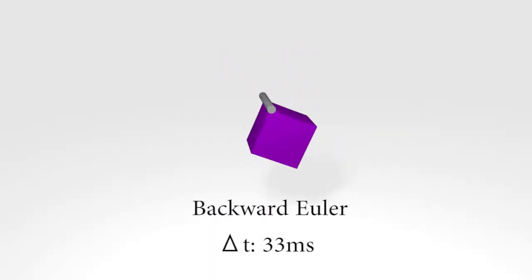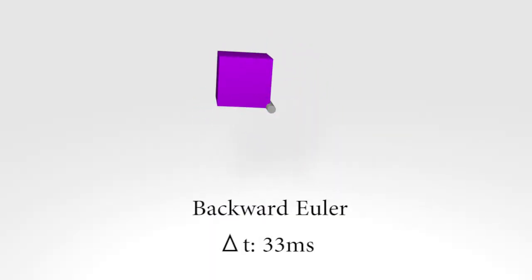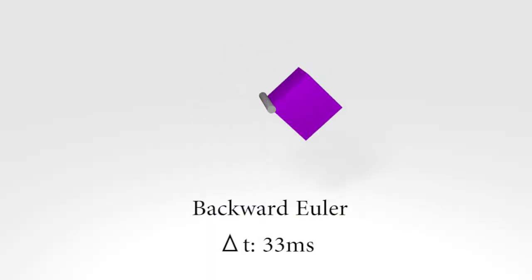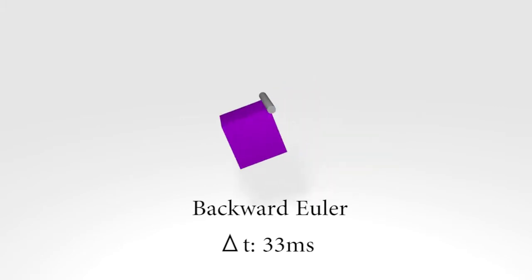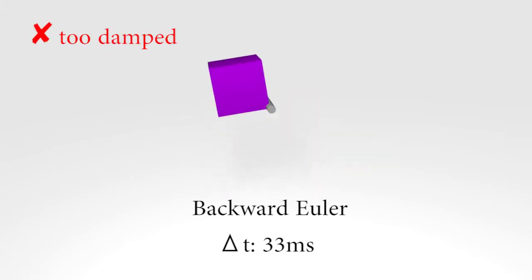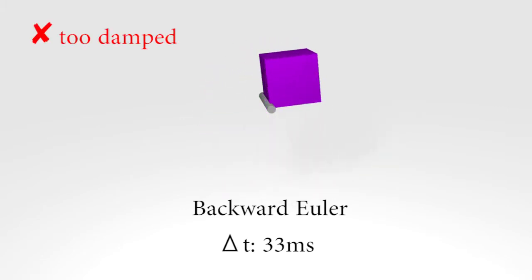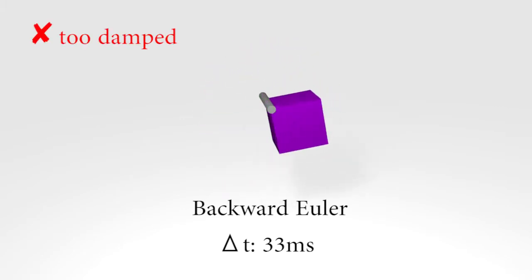The typical solution in physics-based animation is backward Euler, which is stable, but introduces artificial numerical damping.